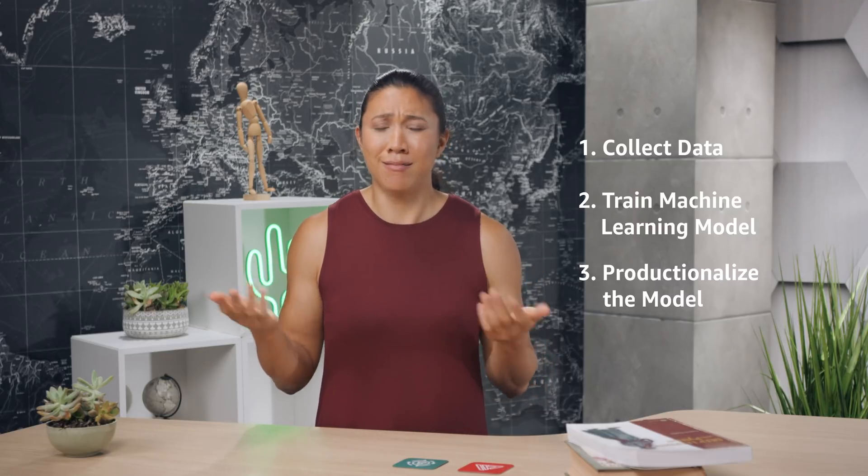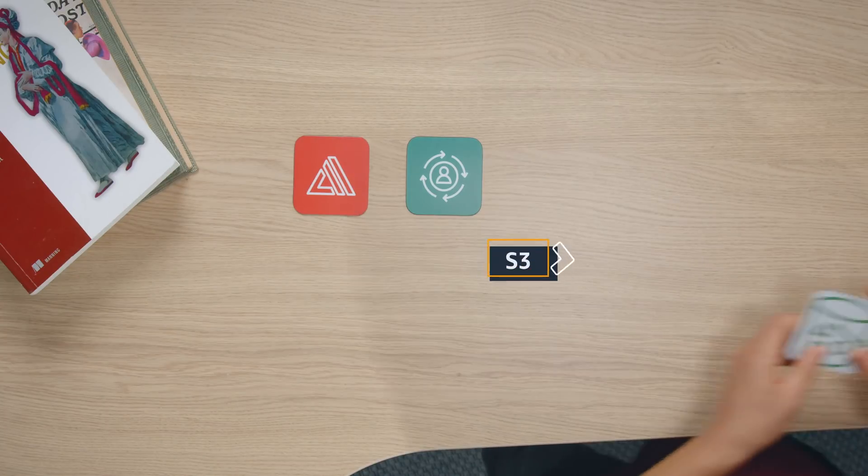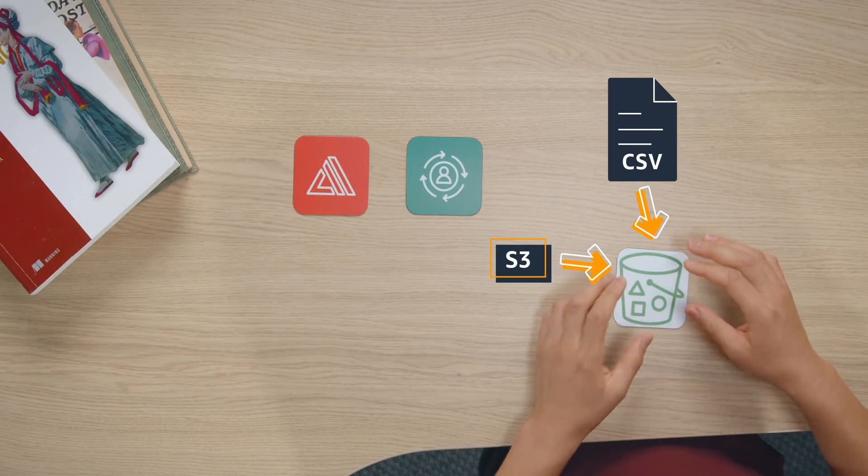You might already have data and not need to collect it. In that case, you can put your data into a CSV file in Amazon S3 and import it into Personalize to bootstrap a model. S3 is object storage — your go-to for storing data sets, since it stores an unlimited amount of data and can handle both structured and unstructured data. If you need to collect data, use Amplify's analytics category to stream data into Personalize in real time.